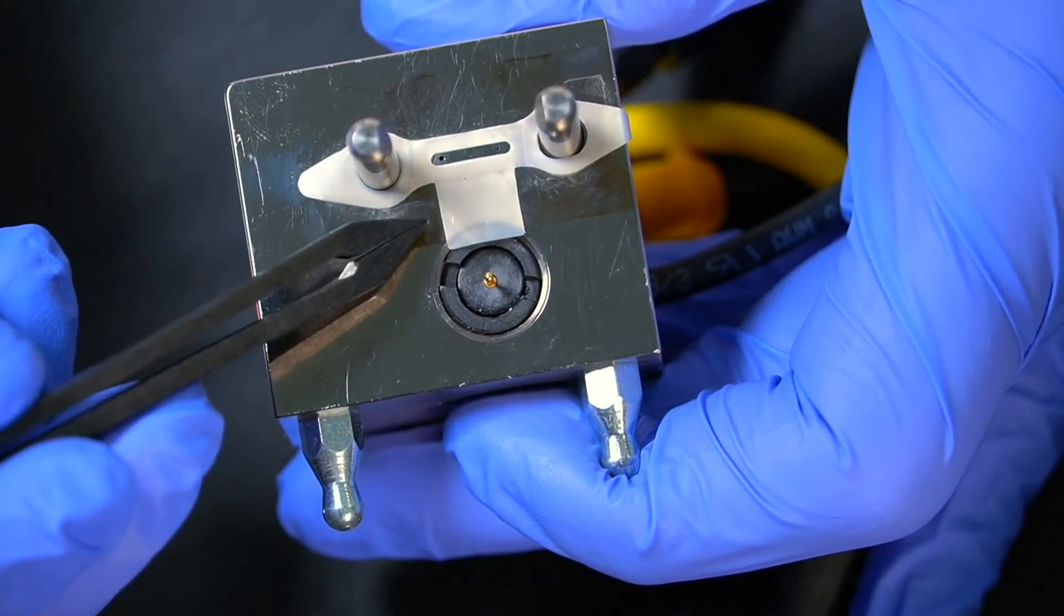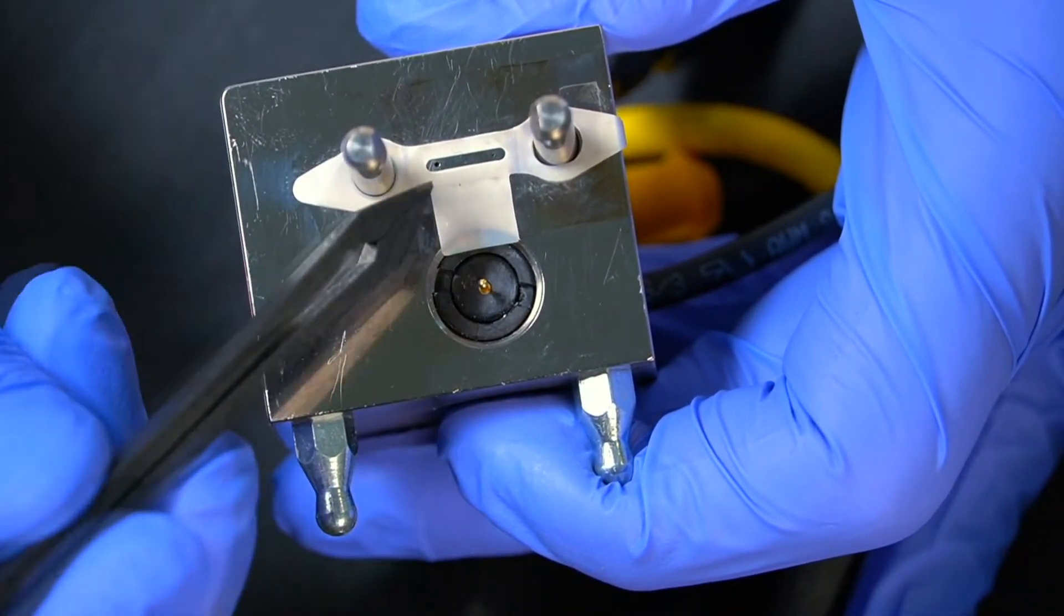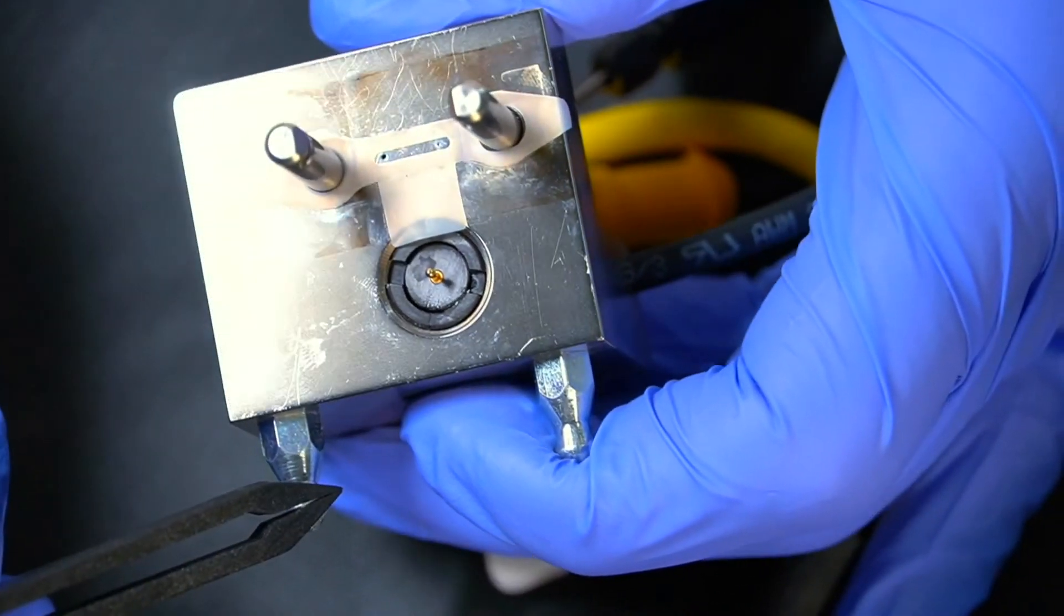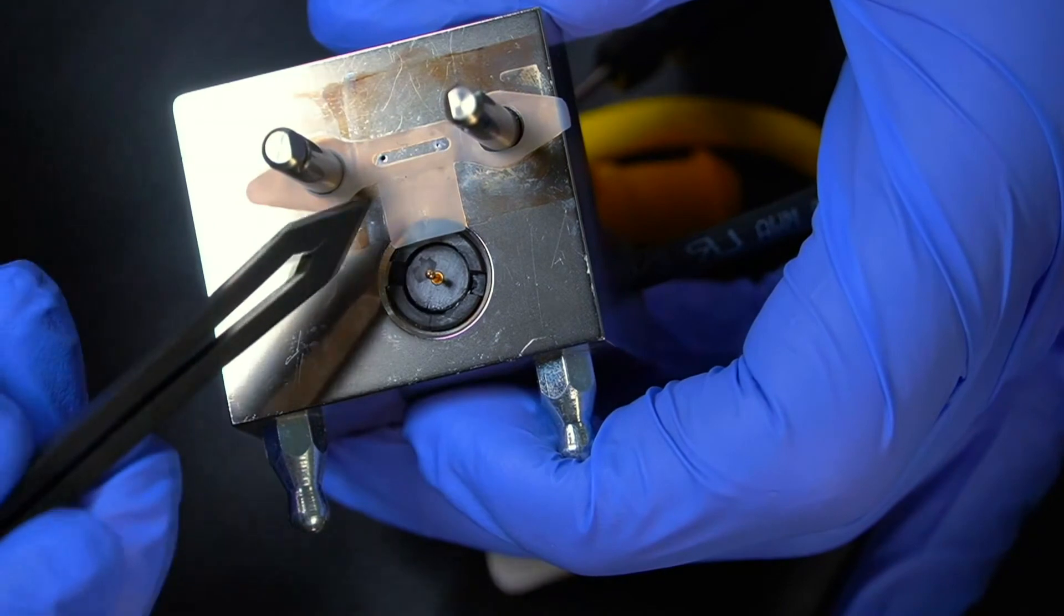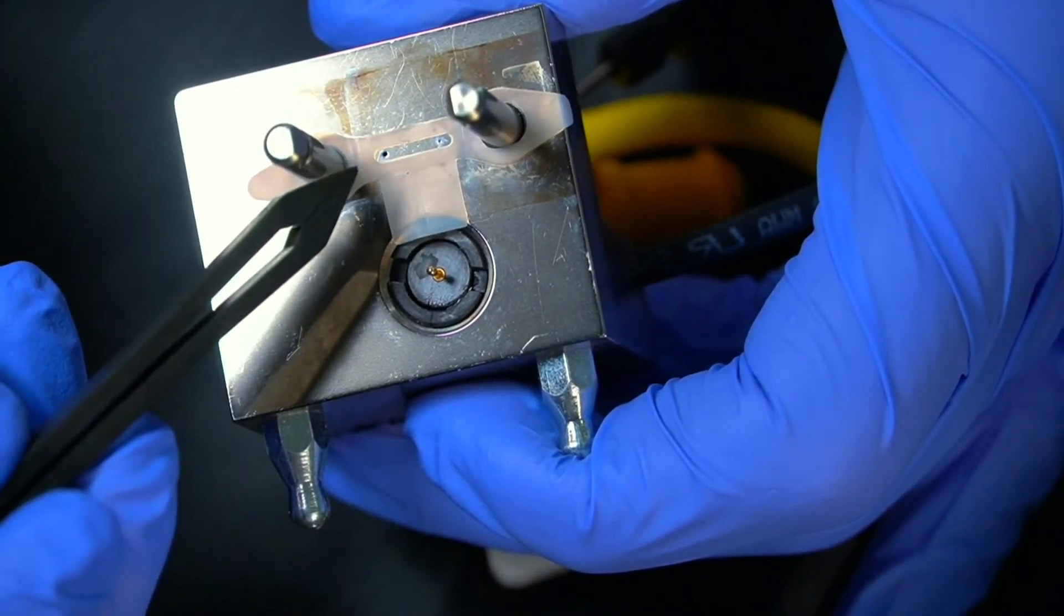Now looking more in detail at the gasket, if you look at the little slot here and if I just rock it over to one side, you can just about make out within the slot there's a little hole at each end. Those little holes are where the eluent flows in.